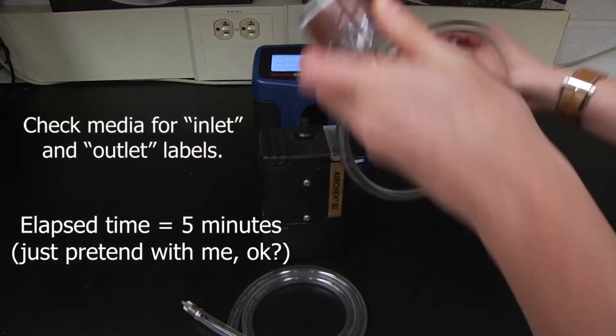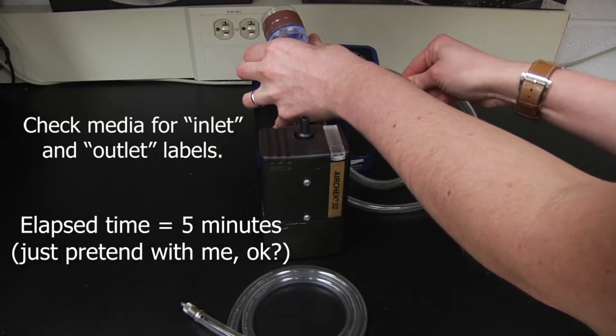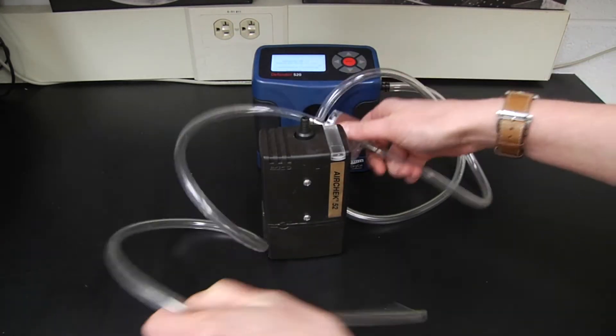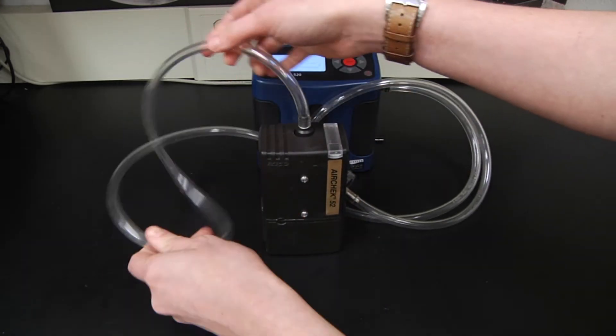Once your pump is sufficiently warmed up, align your sampling train so that your pump is sucking from the suction port of your electronic calibrator. Ensure that the pressure port is clear.